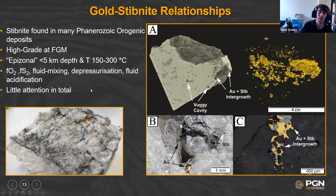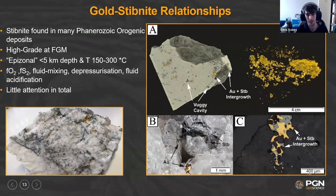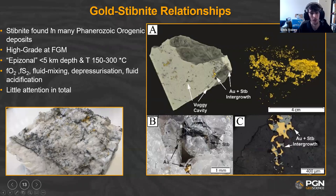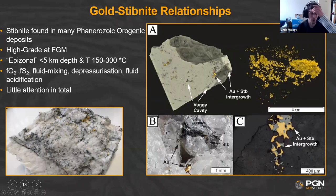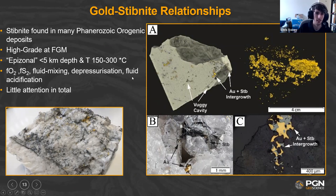What's known about stibnite in these deposits is that it's epizonal — a low-temperature mineral forming at less than five kilometers depth, usually at 150–300°C. It doesn't usually get much attention, though it is quite prolific. Different mechanisms can make stibnite form: changes in sulfur or oxygen fugacity, fluid mixing, or depressurization. But normally it must be a low-temperature mineral.